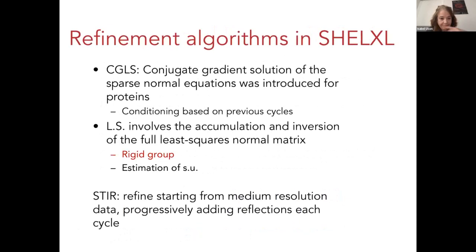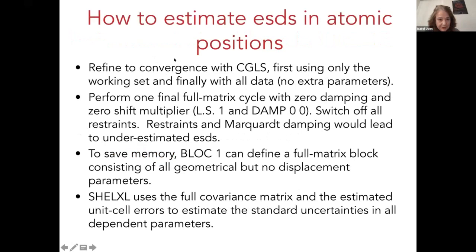Although the standard refinement would use conjugate gradient, for some purposes you would need full matrix least-squares refinement, which is mainly interesting for estimation of standard uncertainties. You can run all the refinement as usual, then include all the data in the last step — since you are not going to take any decisions anymore, there is no need to omit a test data set — and run one cycle of full matrix least squares, which you could block-diagonal if memory is an issue.